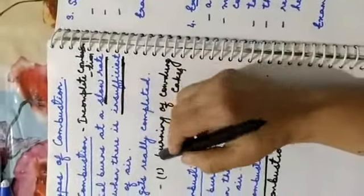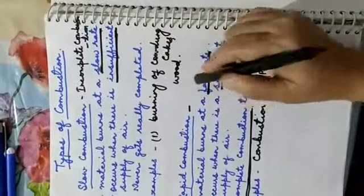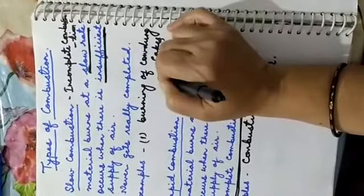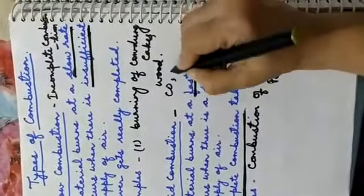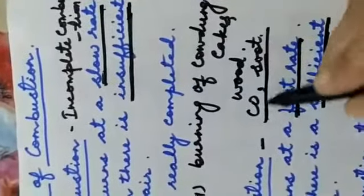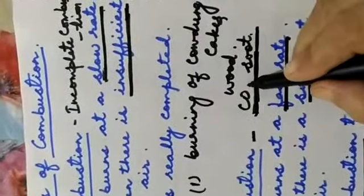Slow combustion consumes more time whereas rapid combustion takes less time. In slow combustion, due to incomplete burning of combustible material and lack of oxygen, the fuel does not react completely. This produces carbon monoxide and soot. That is why incomplete combustion, or slow combustion, is more harmful — carbon monoxide is more harmful to us than carbon dioxide.